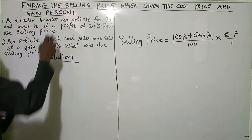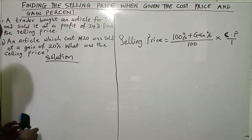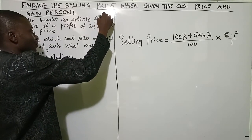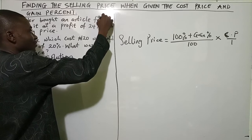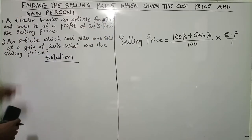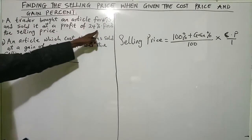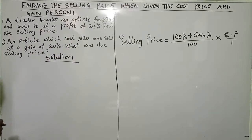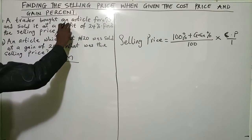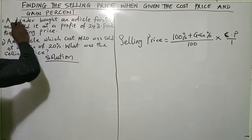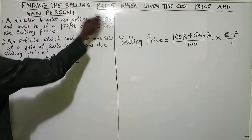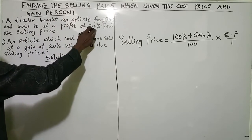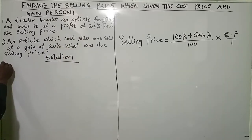The first question says that a trader bought an article for 75 naira and sold it at a profit of 24 percent — find the selling price. So now the cost price has been given to us, the article was bought at 75, and the profit percent or gain percent is also given as 24 percent.